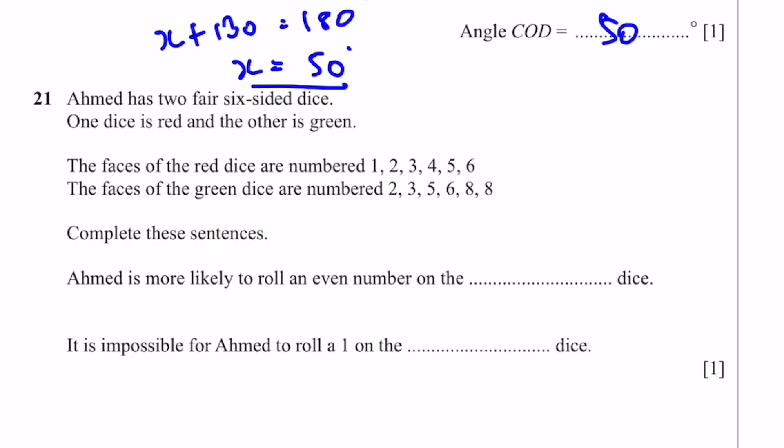Question 21. Ahmed has two fair six-sided dice. One dice is red and the other is green. The faces of the red dice are numbered 1, 2, 3, 4, 5, 6. The faces of the green dice are numbered 2, 3, 5, 6, 8, 8. Complete these sentences. Ahmed is more likely to throw an even number on the green dice, because there are 3 even numbers out of 6 in the red dice, and 4 even numbers out of 6 in the green dice. It is impossible for Ahmed to throw a 1 on the green dice, because there's no 1s, only 2, 3, 5, 6, and two 8s. That's the answer.